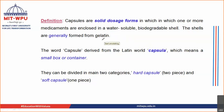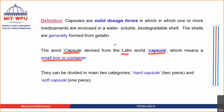That is a major disadvantage of gelatin. Now, how is the word 'capsule' derived? The word capsule is derived from the Latin word 'capsula', which means a small container or small box. Just like a capsule, it is like a small box in which the medicaments are put inside.